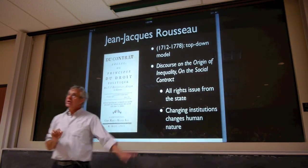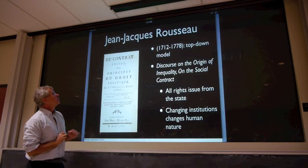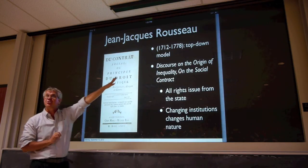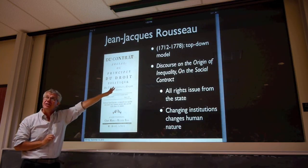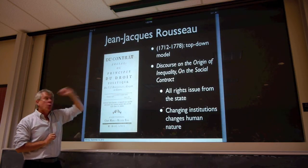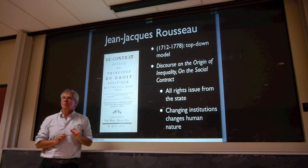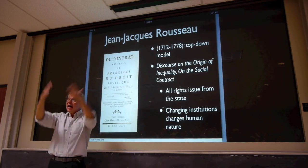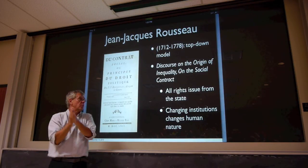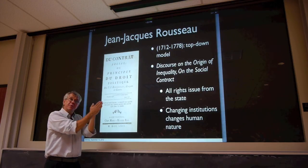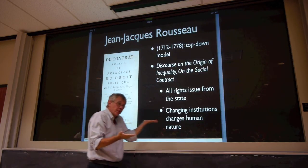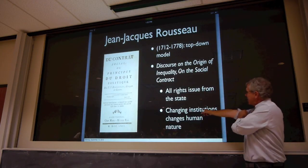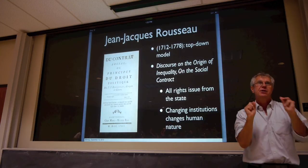The other top-down conception is in Jean-Jacques Rousseau. He writes the Discourse on the Origin of Inequality and then On the Social Contract — the first describing the problem of inequality as he sees it, and the second providing the solution. According to Rousseau, all rights issue from the state. All rights are given top-down. There are no rights at all in the state of nature. I actually enter into the social contract in order to gain certain rights. Those rights come from the state.